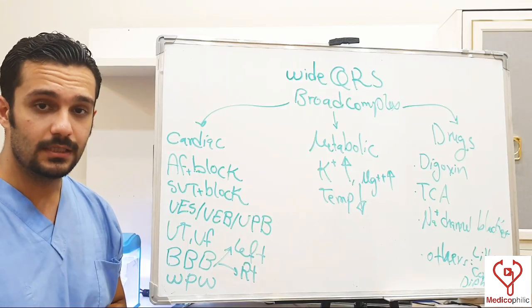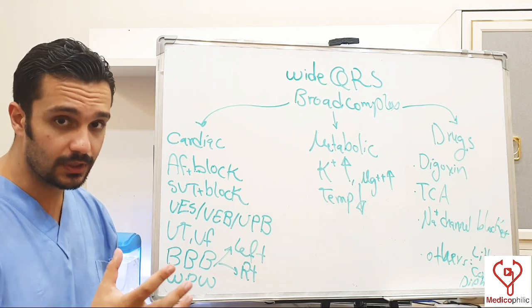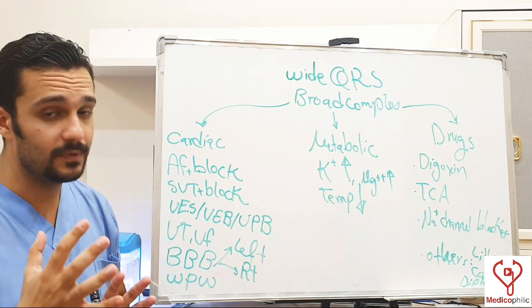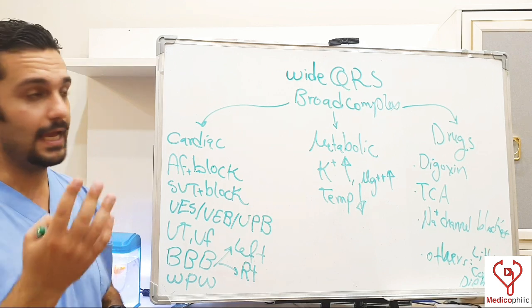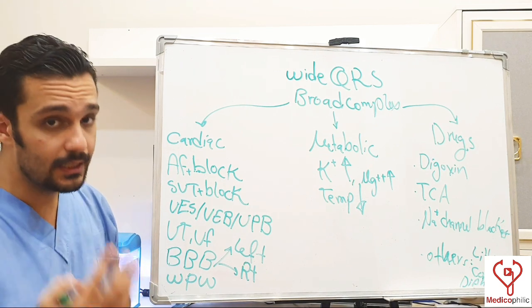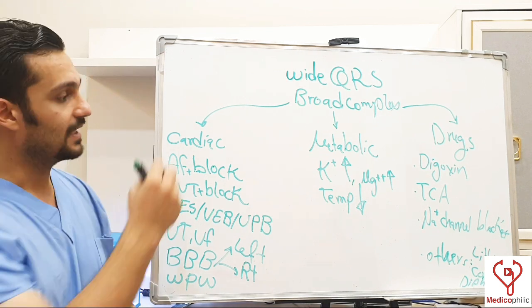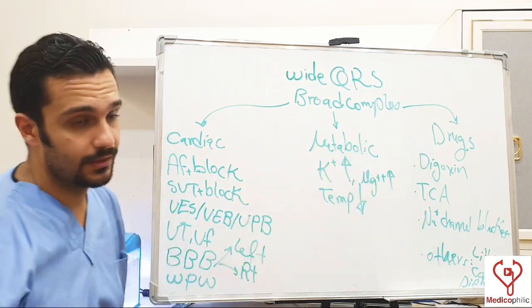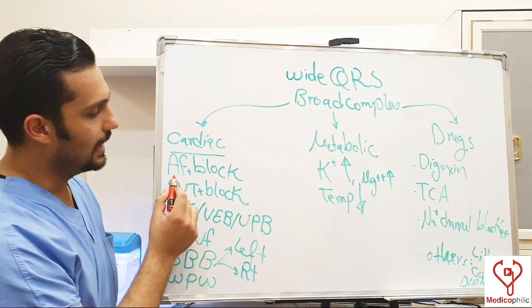Coming to the widening of the QRS: if the signal is coming from the ventricle it causes a broad or wide QRS complex. We have divided the causes of widening into cardiac causes, metabolic causes, and drugs.